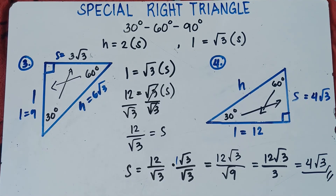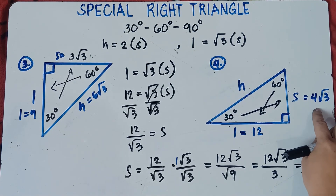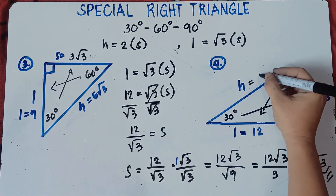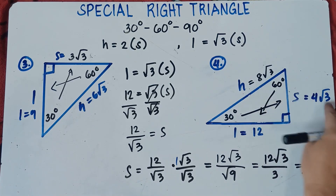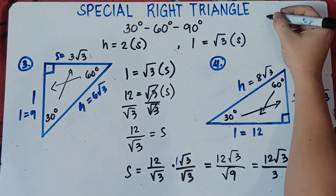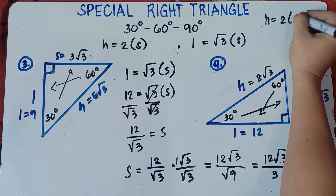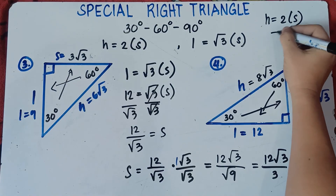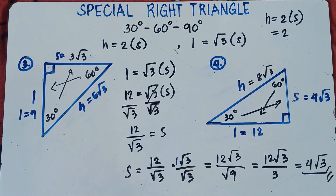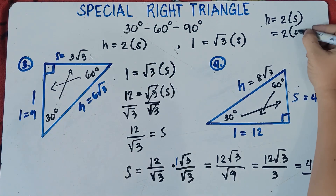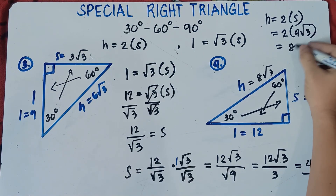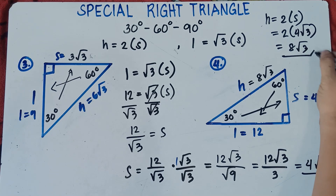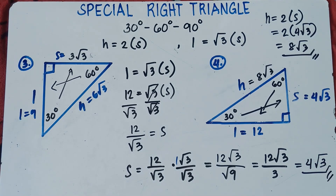Now to get the hypotenuse, simply multiply the shorter leg by 2: 2 × 4√3 = 8√3. Using the formula: H = 2S = 2 × 4√3 = 8√3 — copy square root of 3. That's all set for the 30-60-90 degree angle.